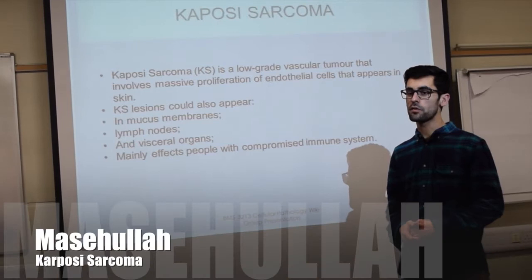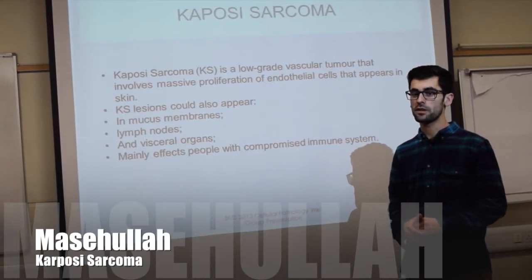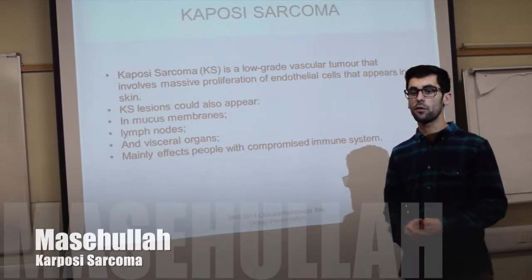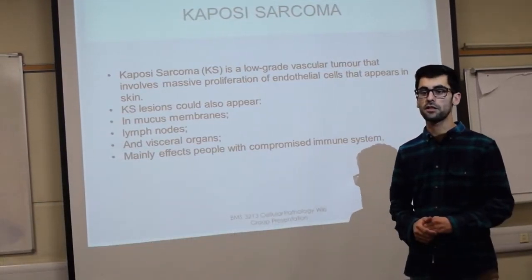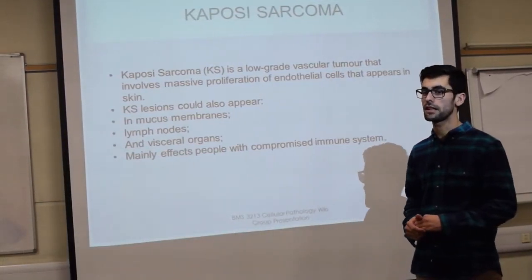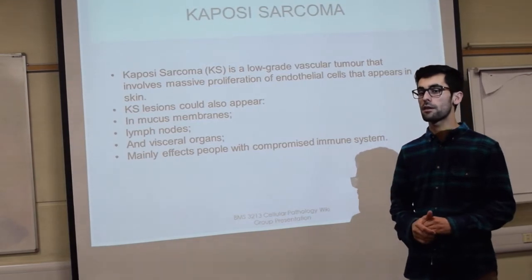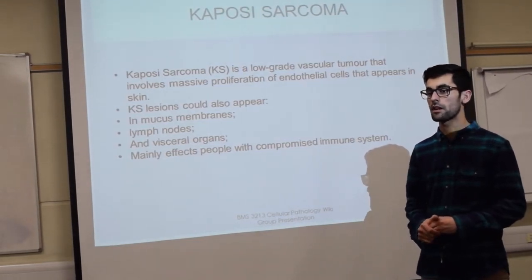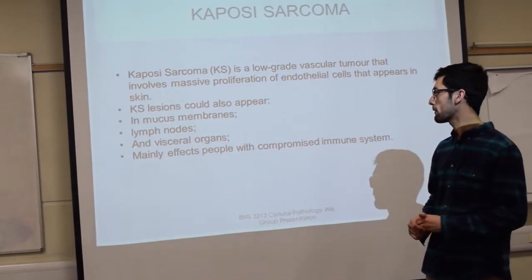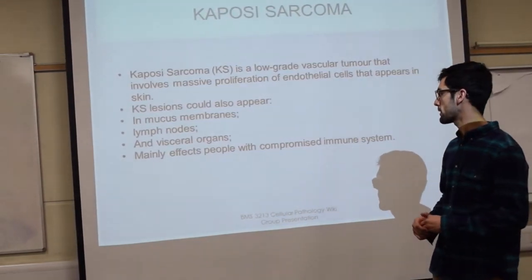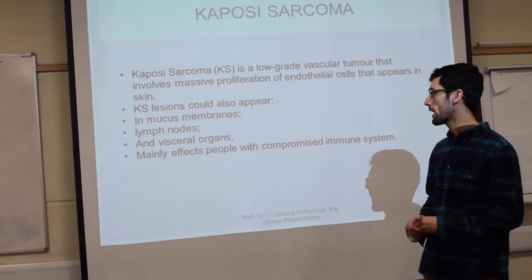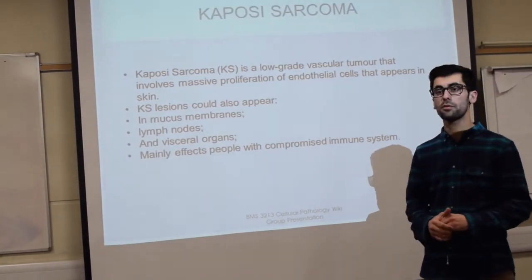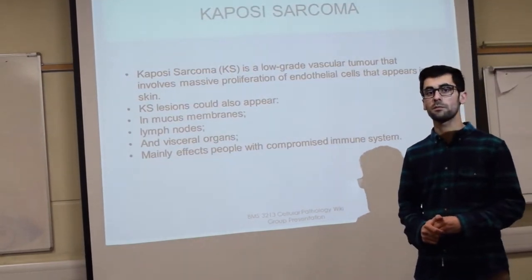Kaposi's sarcoma is a low-grade vascular tumor that involves massive proliferation of the endothelial cells. It appears in skin, mucous membranes, lymph nodes, and visceral organs, and it mainly affects people with a compromised immune system.